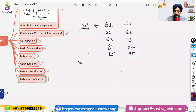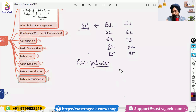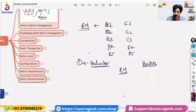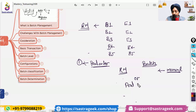The first place batch determination is needed is your production order. In your production order you have said that you will be requiring RM. Now for that RM, which batch do we need to use — b1, b2, b3, b4? Currently you need to put it manually, either at the production order level or when you do the production order confirmation, where RM is getting consumed.